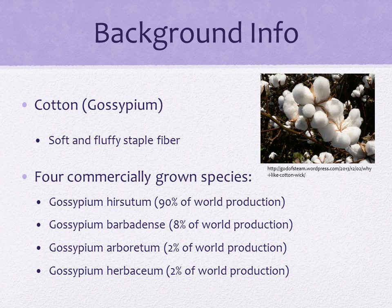Cotton is a soft fluffy staple fiber that grows in a ball or protective capsule around the seeds of cotton plants of the genus Gossypium. The fiber is almost pure cellulose. Under natural conditions, the cotton balls will tend to increase the dispersion of the seeds. There are four commercially grown species of cotton: Gossypium hirsutum, Gossypium barbadense, Gossypium arboreum, and Gossypium herbaceum.